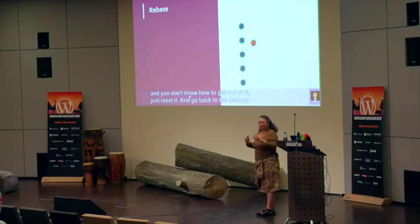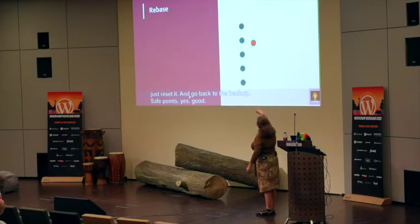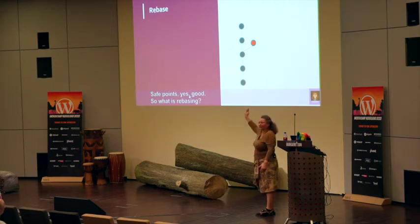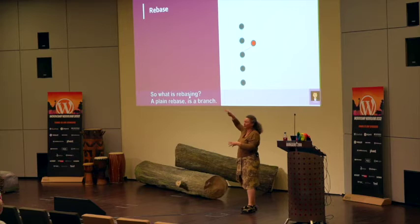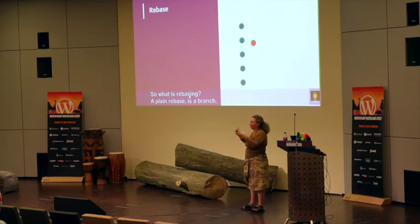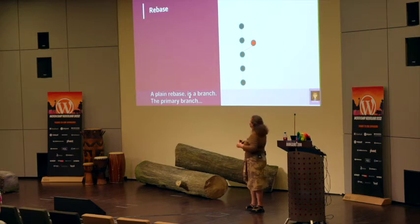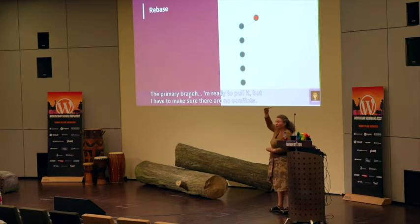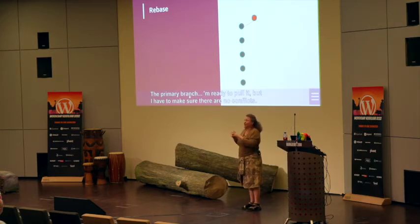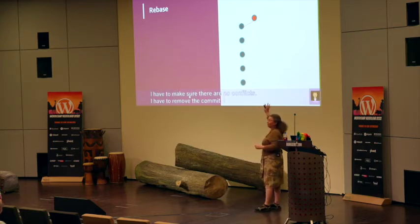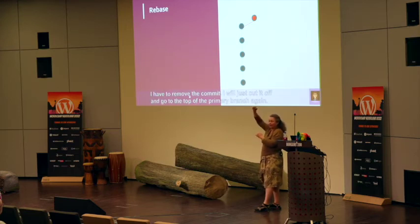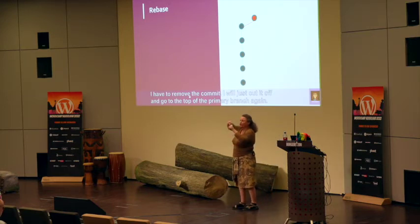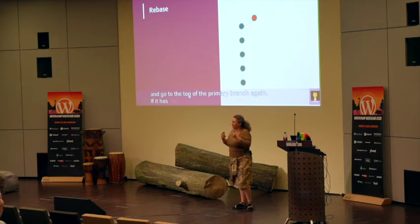What is rebasing? A plain rebase is: we have a branch which branched off at some point, and the primary branch has moved on. I'm going to cut the commit off from where it was originally attached and move it to the top of the primary branch again. That's a plain rebase. You don't need to do this with just one commit — if your branch has five commits, you can rebase all five on top of the latest commits of the master branch. That's normal rebase.